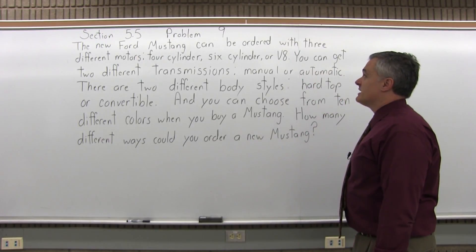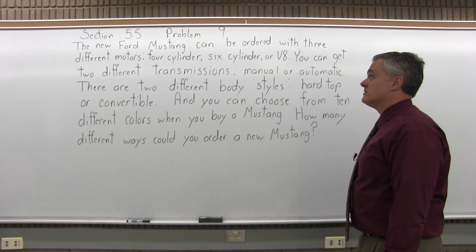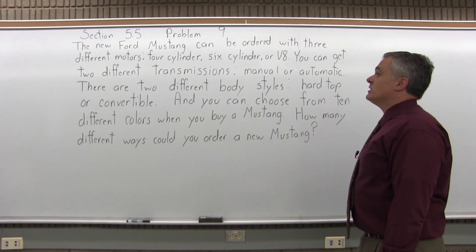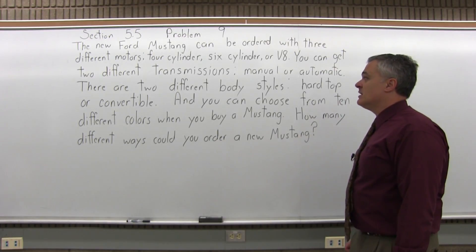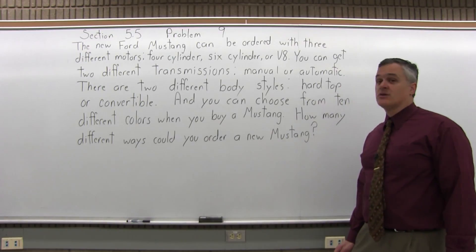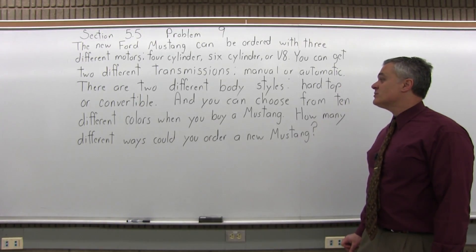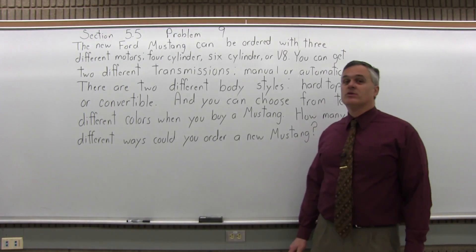The new Ford Mustang can be ordered with three different motors: four-cylinder, six-cylinder, or V8. You can get two different transmissions, manual or automatic. There are two different body styles, hardtop or convertible. And you can choose from ten different colors when you order a new Mustang. How many different ways could you order a new Mustang?